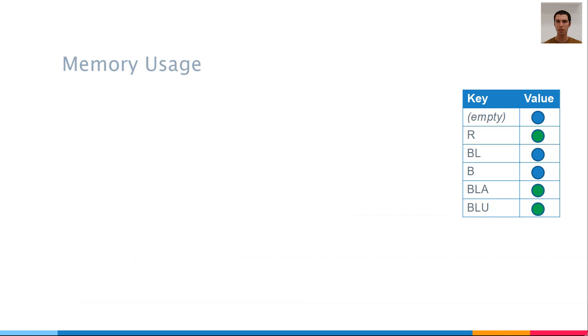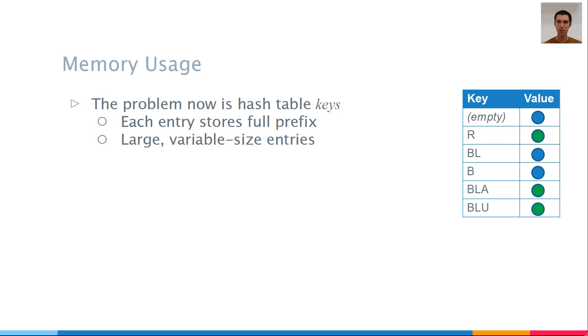A major issue with this technique, of putting the nodes in a hash table, is that of memory usage. In regular hash tables, each entry, each key value pair, stores the full key associated with the value. In our case, the keys are prefixes of the strings stored in the trie. This means that if we have a long string in the trie, we'll have many long keys, and the memory usage will be quadratic in the length of the string. Moreover, it means that our hash table will have to handle variable length keys, which will make it more complex.